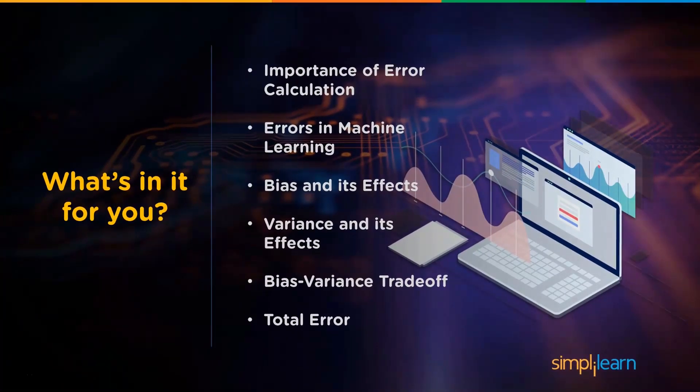Today we'll cover the importance of error calculation, errors in machine learning, bias and its effects, variance and its effects, the bias-variance tradeoff, and total error. We're starting to dig deep into our different machine learning models so we can understand which ones work better and why. Very central to that is bias and variance and the tradeoffs between them.